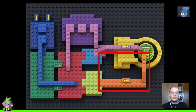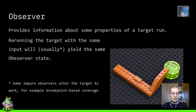The first component we'll discuss is the observation channel — or observer as an abbreviation — which is the entity that provides some information about a specific run of the target. This information lives inside the target. It is usually read-only, so the fuzzer doesn't use the observation channel to instruct the target; the fuzzer just observes — it's a passive channel. It is usually deterministic, but not in all cases.